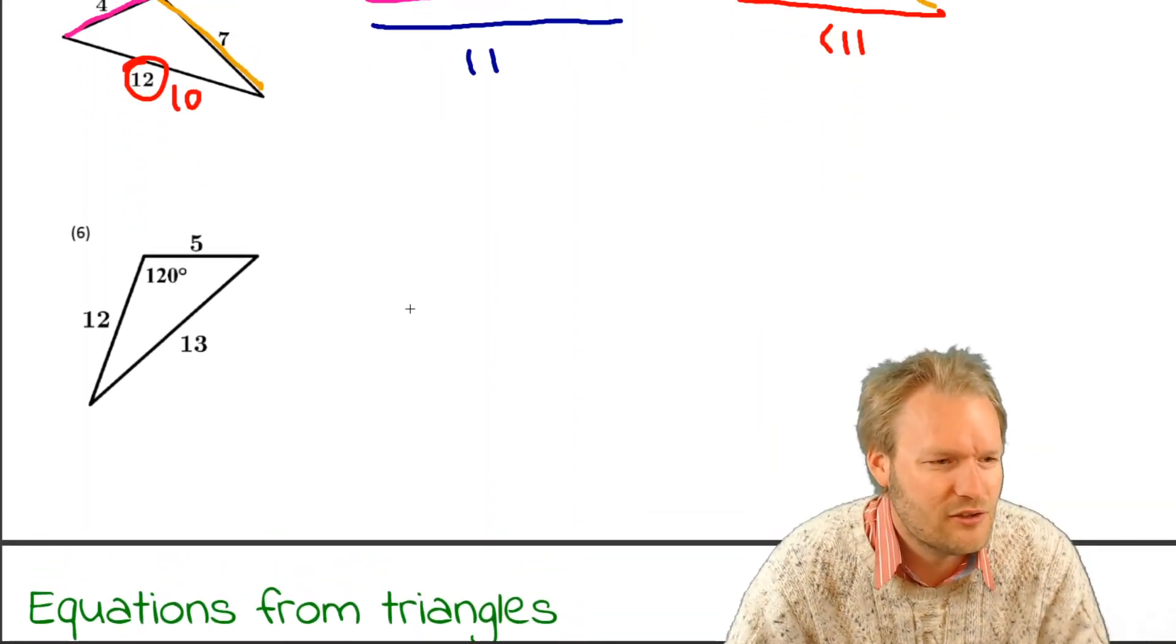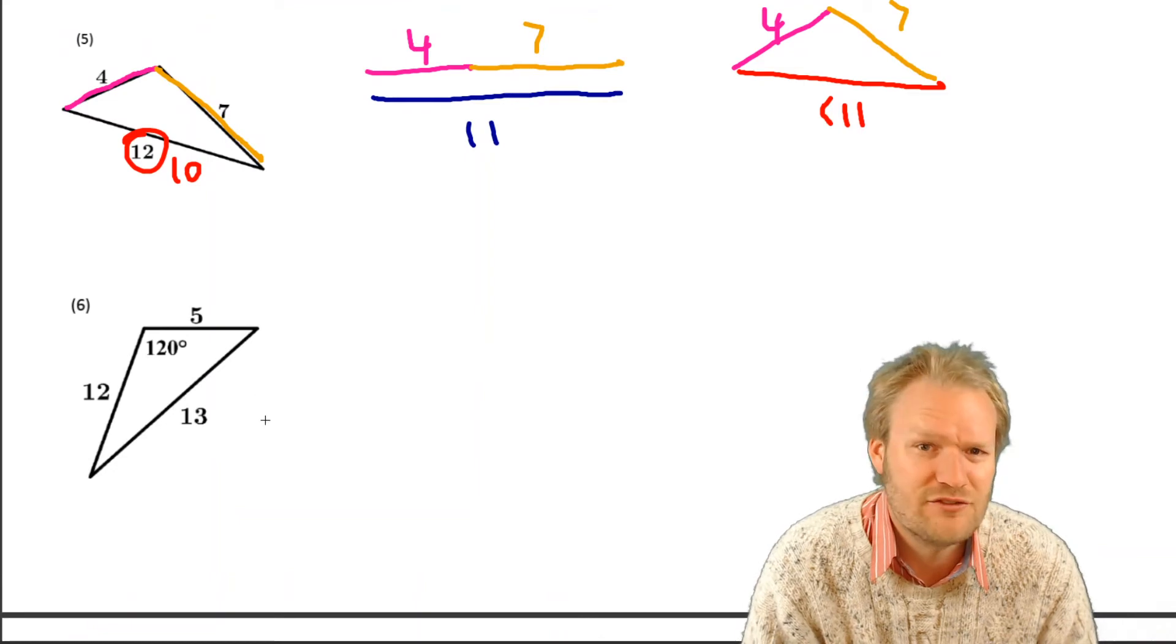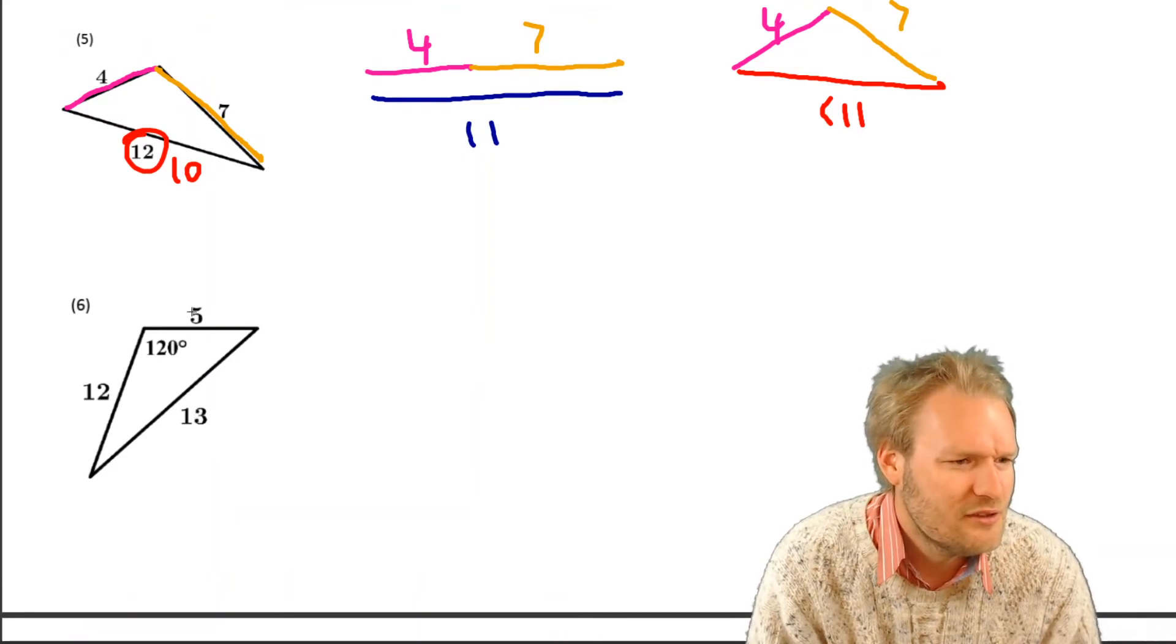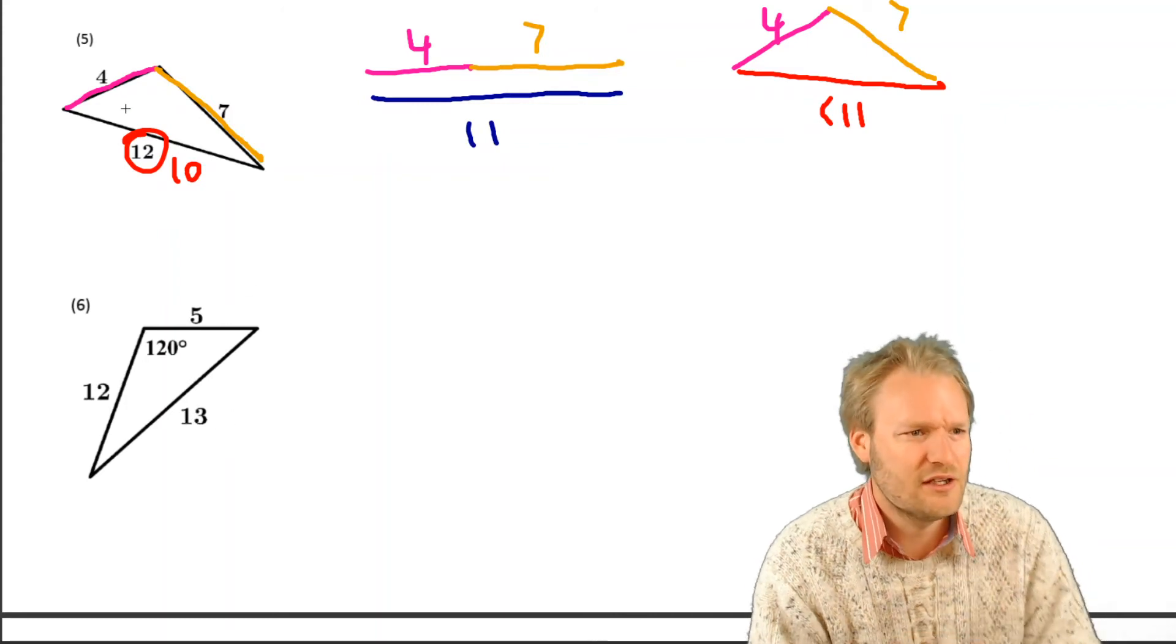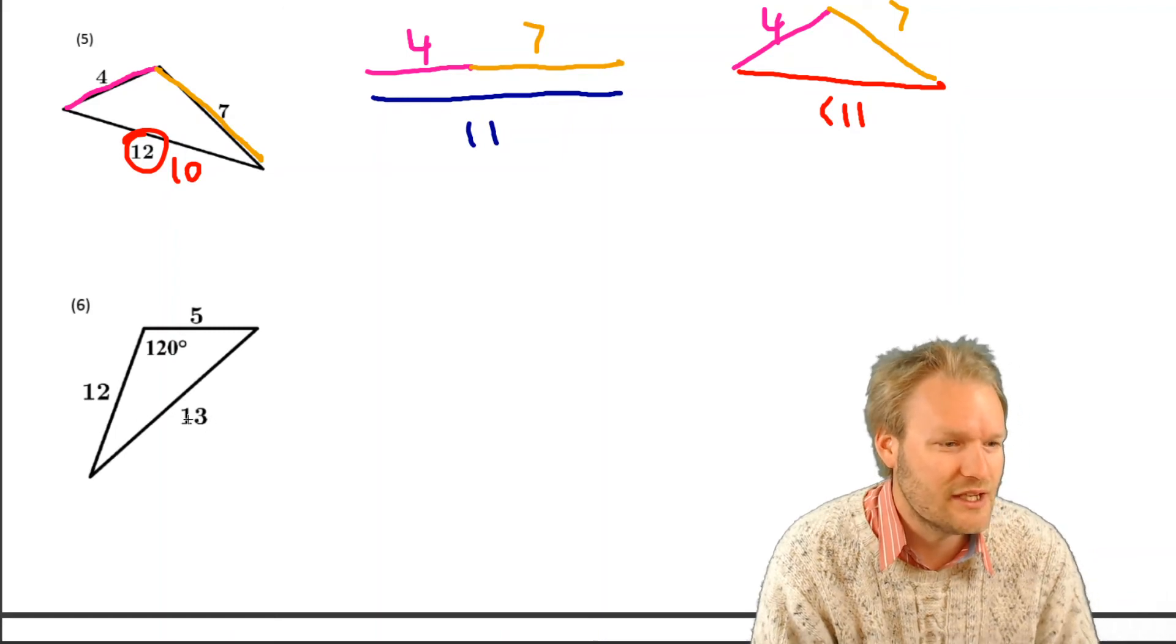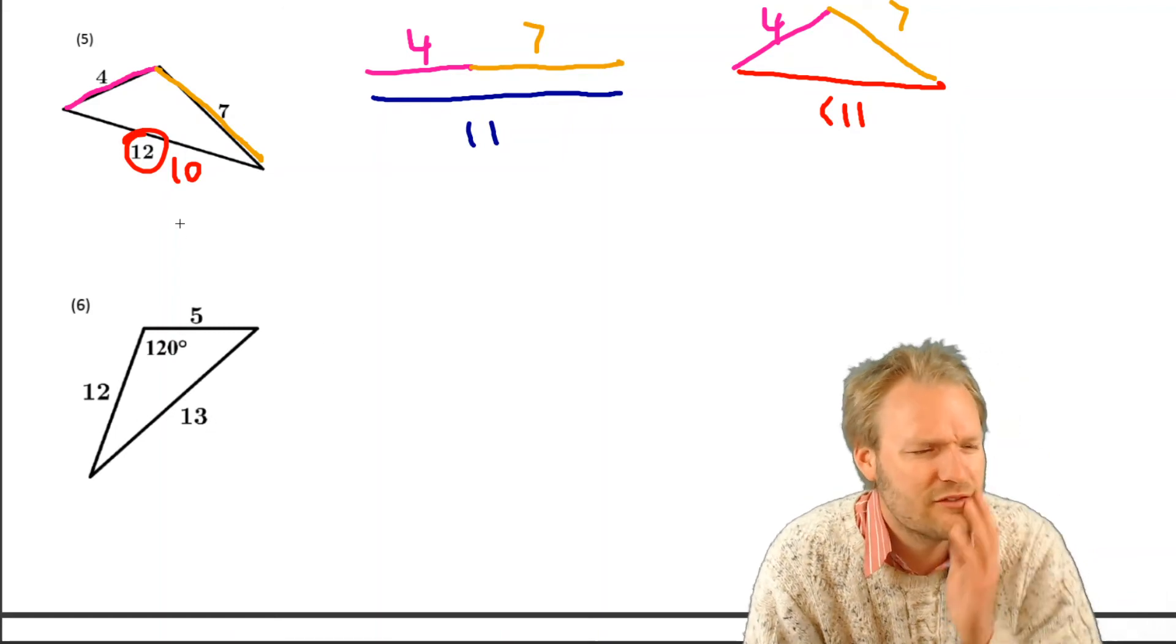And then I think we're on our last one. That is 5, 12, 13, 120. Cool. 5 and 12, 17. So. Yeah. That could work. Right. This isn't like this one. If you add these two together, it's bigger than that. Add those two. Okay. So it's not like question 5.